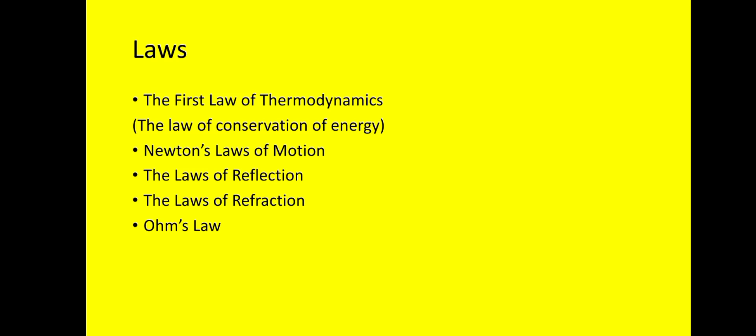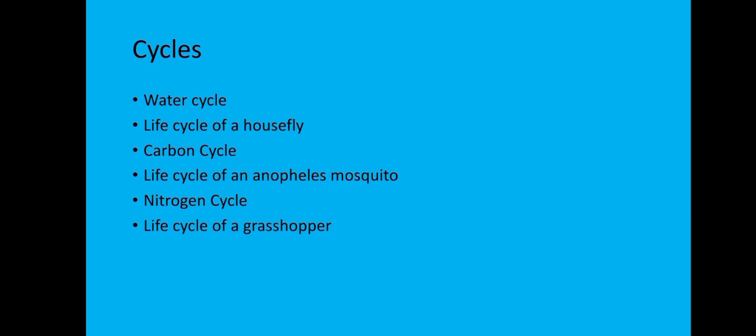Now the second group is cycles. We have the water cycle which is studied in basic seven, the life cycle of a housefly which is also stated in basic seven, carbon cycle which is in basic eight, the life cycle of an Anopheles mosquito which is in basic eight, nitrogen cycle in basic nine, and the life cycle of the grasshopper which is also in basic nine.